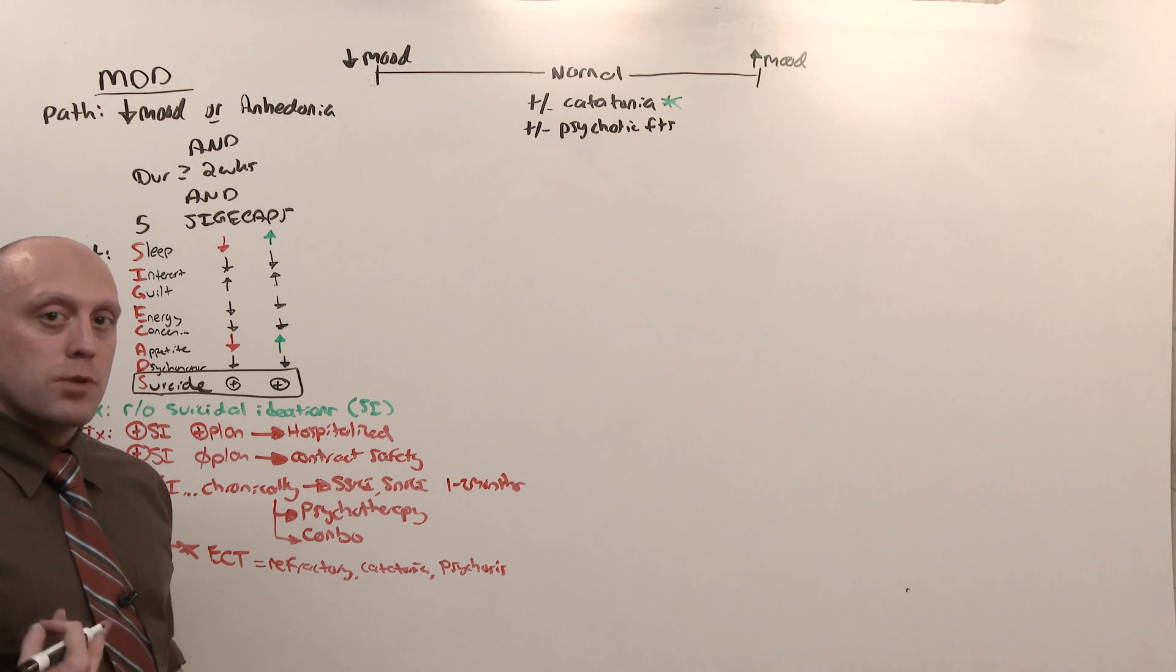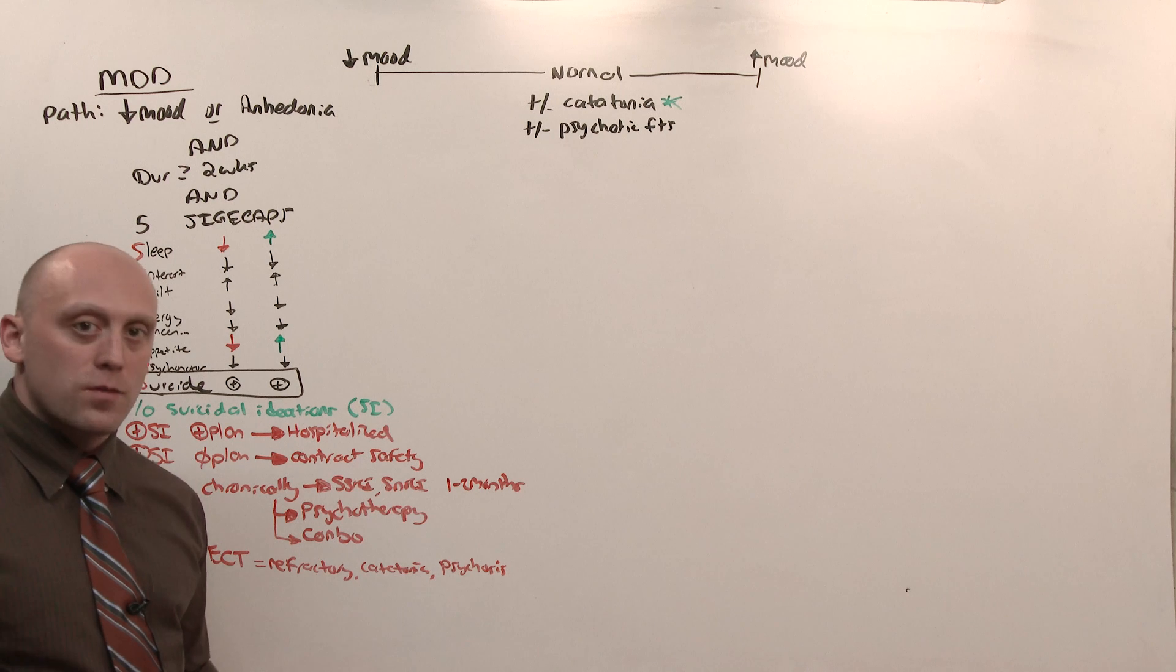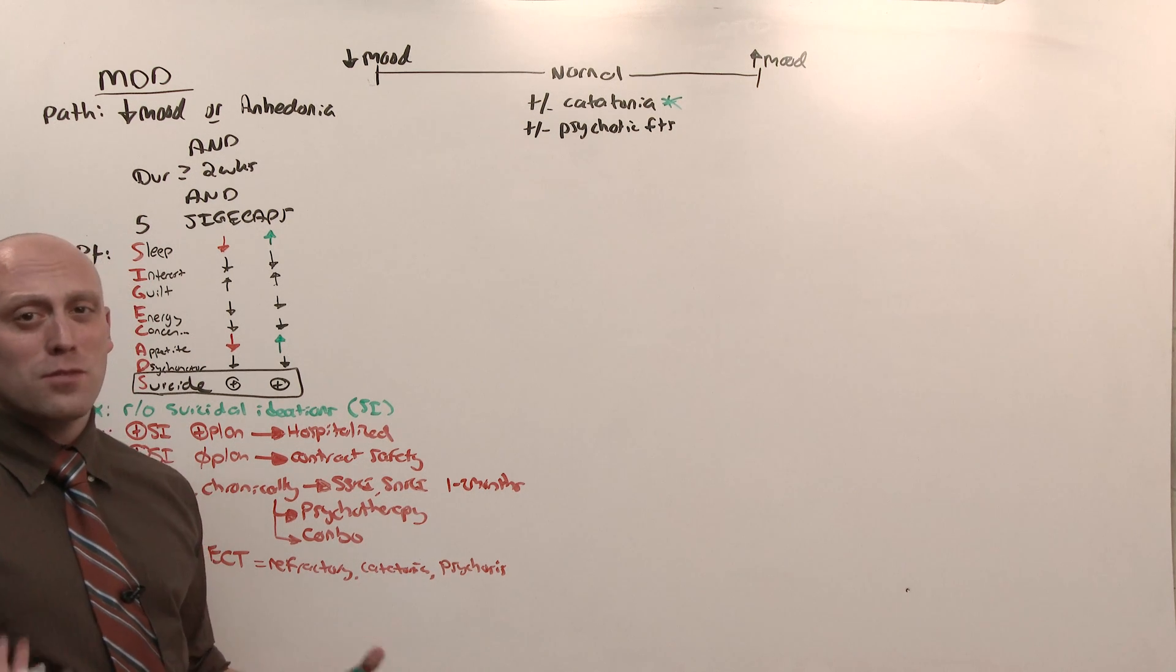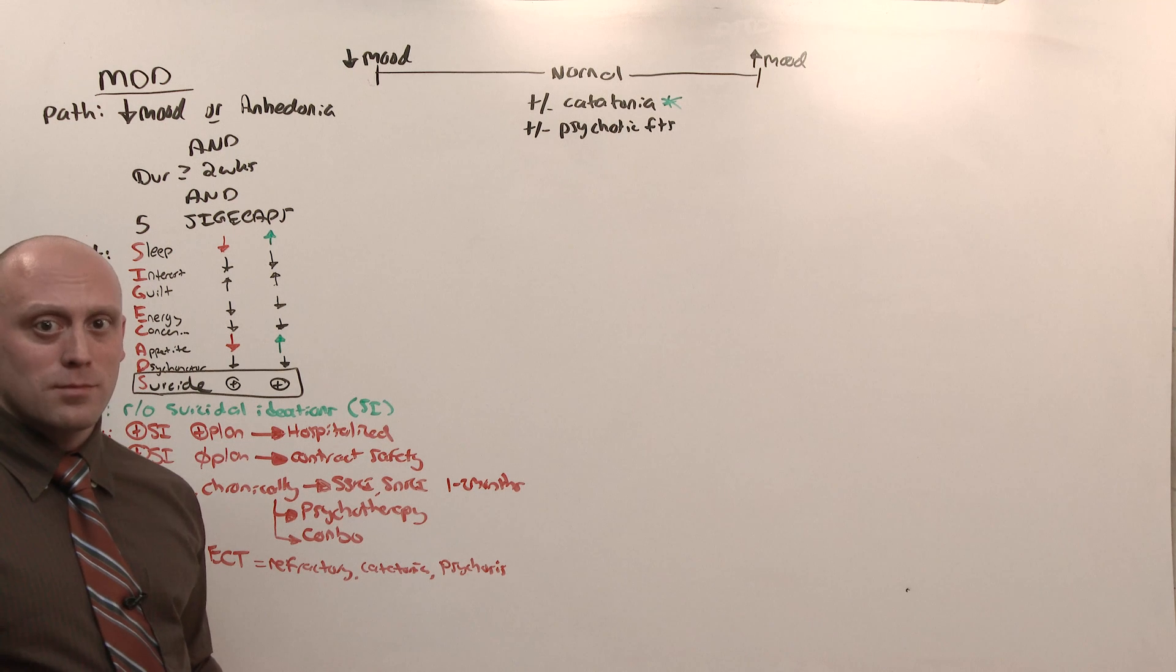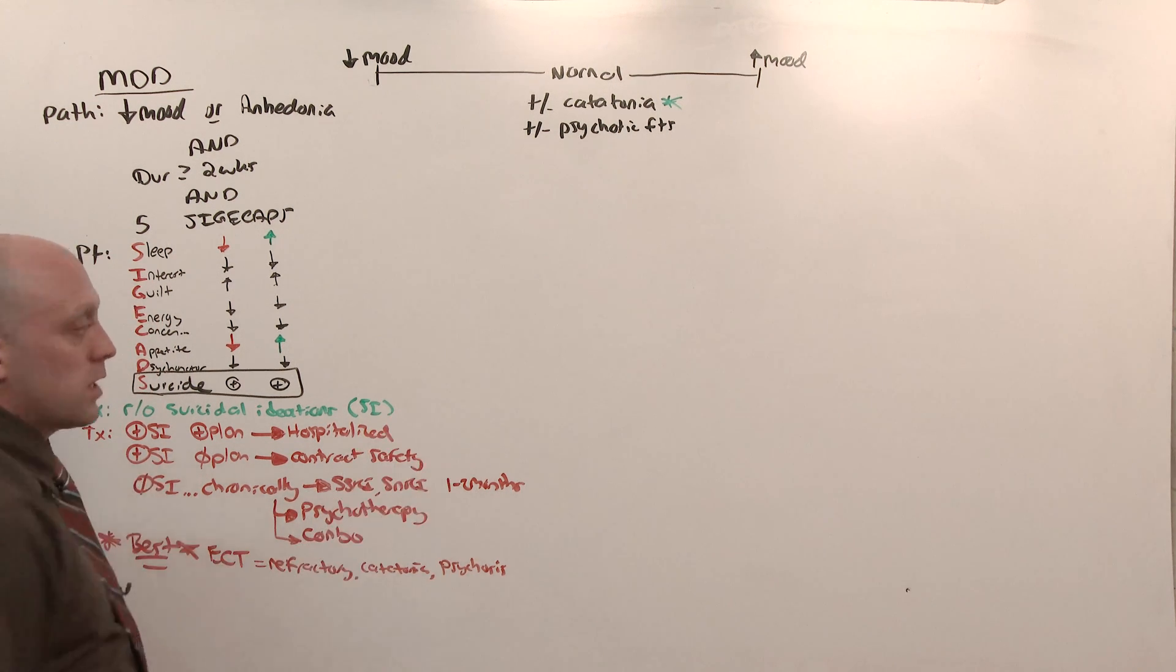See major depressive disorder as the slow moving, barely can move, can't get out of bed, can't motivate themselves, feeling down but guilty about everything, even though they have no energy and can't sleep. That's what depression looks like, and it should be treated with SSRIs unless you're going to hospitalize or contract for safety.